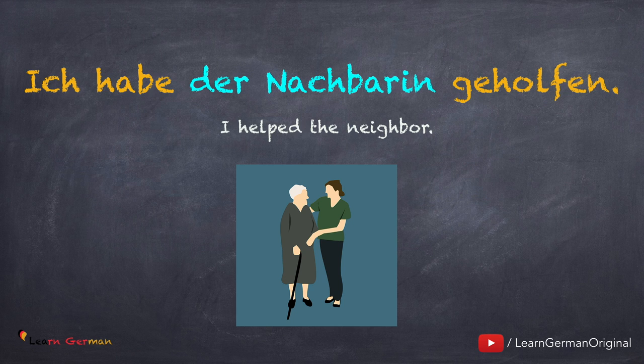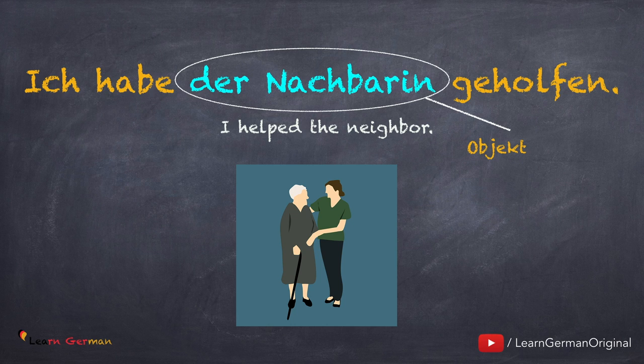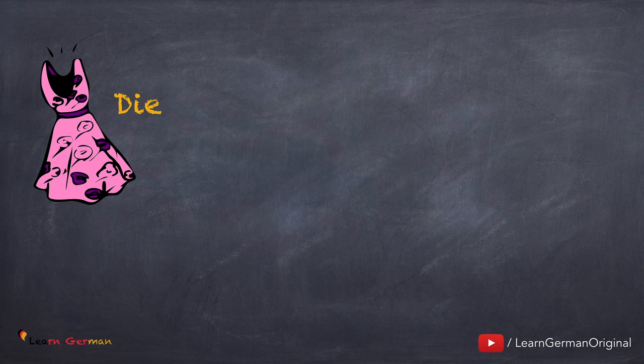Then there are verbs that take only the dative object. These verbs are known as Dativverben. For example, Ich habe der Nachbarin geholfen. The verb helfen is a dative verb. Der Nachbarin is the dative object. If you want to revise Dativverben, you can do so by watching our video on the same. The link is given below in the description.